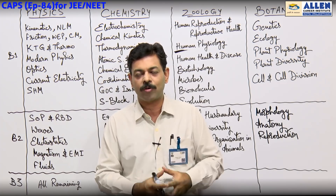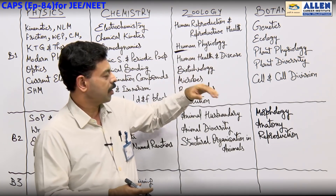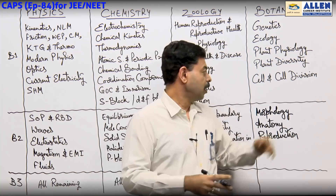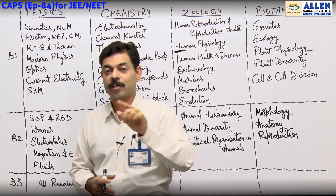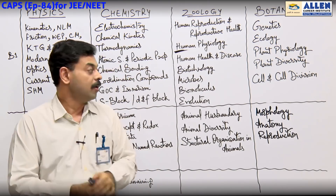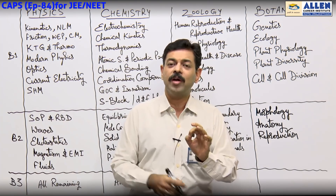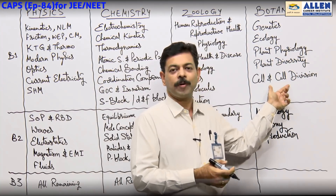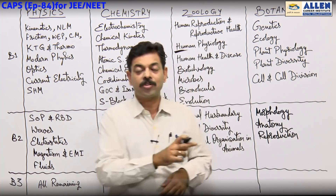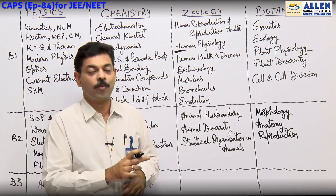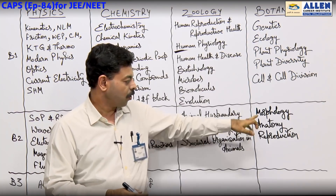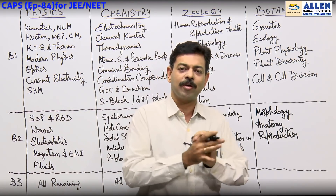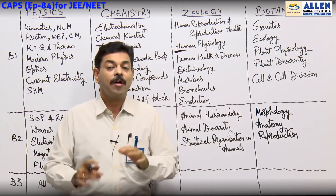In Botany, Genetics, Ecology, Plant Physiology, Plant Diversity — these cover our major chunk. Cell and Cell Division was in Block Two last year but this time placed in Block One for the same reason — there is time. Cell and Cell Division questions are very simple; even students studying from 9th-10th level know this. With a little effort, students can quickly cover this topic. Block One sections are equally important this year — don't make anything secondary. Morphology, Anatomy, Reproduction in Flowering Plants consume time but are not supremely important — still, you have to do them theoretically.